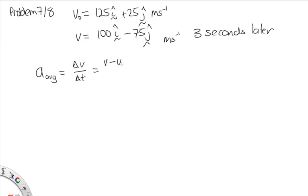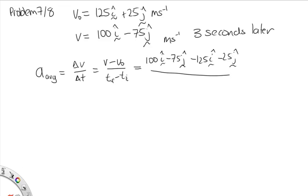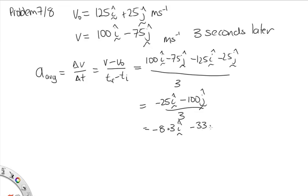So this is the final velocity minus the initial velocity over the final time minus the initial time. That is 100i minus 75j minus 125i minus 25j. The time interval goes from 0 seconds to 3 seconds, so that's over 3. Adding the i components gives minus 25i, and adding the j components gives minus 100j, all over 3. Doing this on the calculator, we get minus 8.3i minus 33j meters per second per second. That's the solution to problem 7 slash 8.